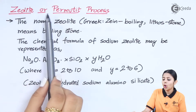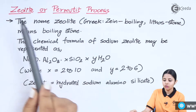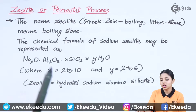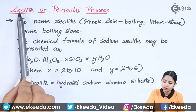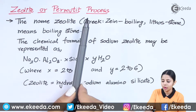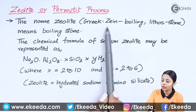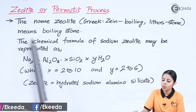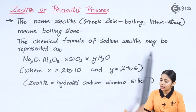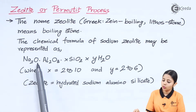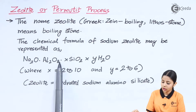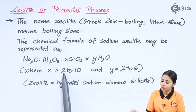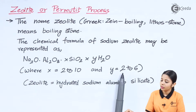In this process we use zeolites, which are also known as permutites. Zeolites or permutites are chemical compounds — they are the same thing, just named differently. The name zeolite comes from the Greek: 'zene' meaning boiling and 'lithos' meaning stone, so it means boiling stone. The chemical formula of sodium zeolite may be represented as Na2O·Al2O3·XSiO2·YH2O, where X can be any number from 2 to 10 and Y can be any number from 2 to 6.